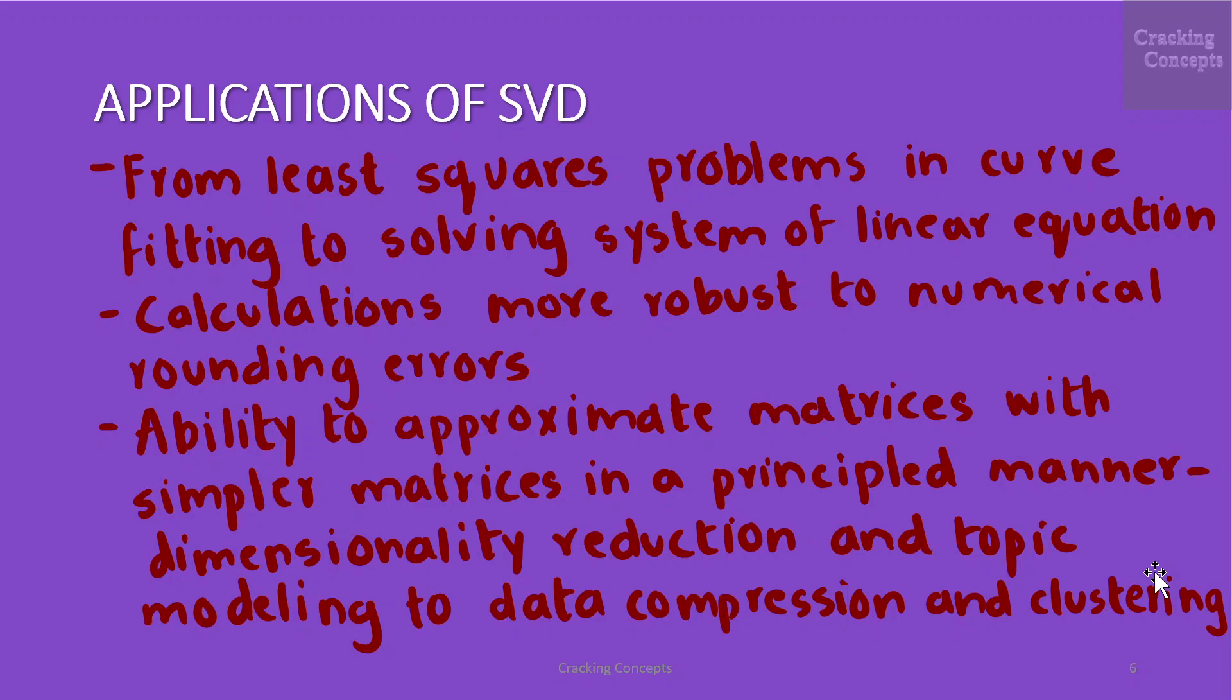SVD is used in a variety of applications in machine learning from least squares problem in curve fitting to solving systems of linear equations. These applications harness various important properties of SVD, its relation to the rank of a matrix and its ability to approximate matrices of a given rank with lower rank matrices. Substituting a matrix with its SVD has often the advantage of making calculation more robust to numerical rounding errors. SVD's ability to approximate matrices with simpler matrices in a principled manner opens up machine learning applications ranging from dimensionality reduction and topic modeling to data compression and clustering.